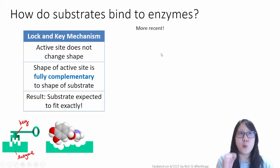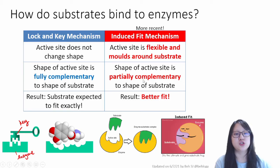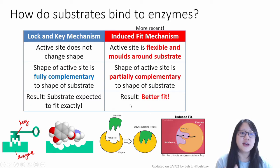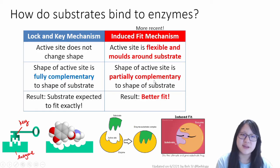But in more recent studies, not one study, but many studies have shown that this other mechanism might be more probable. This is called the induced fit mechanism. Now in this mechanism, the active site is flexible and molds around the substrate. So you can see here that it's kind of the shape, but when the substrate comes near, it changes shape to fit around the substrate. So the shape of the active site, we say, is only partially complementary to the shape of the substrate. And the result of this model, this molding and fitting around, is a better fit for both the substrate and the enzyme binding. So yeah, the induced fit mechanism is the more recent one, and probably the more accurate mechanism.